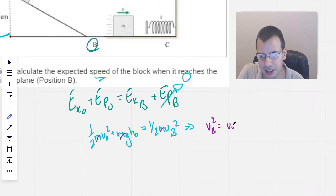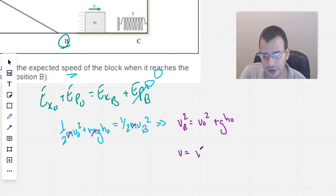And we have v initial squared plus gravity times h naught. So then velocity is v naught squared plus g h naught, square root it.